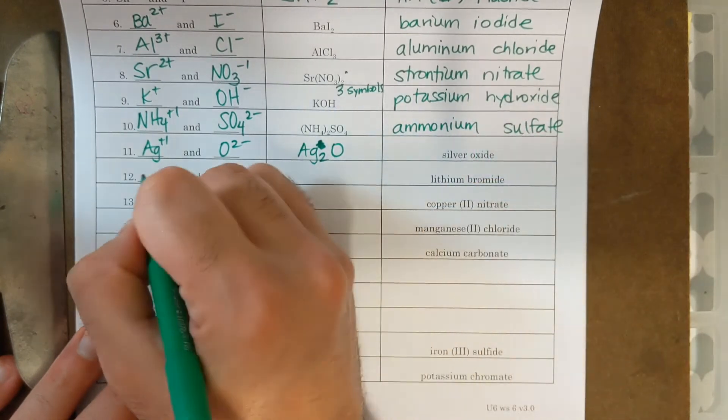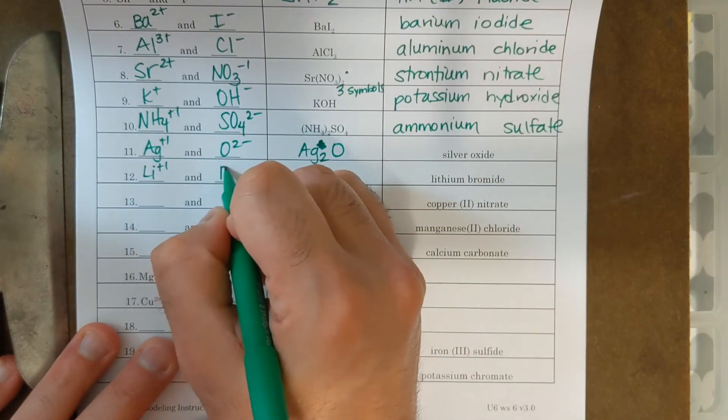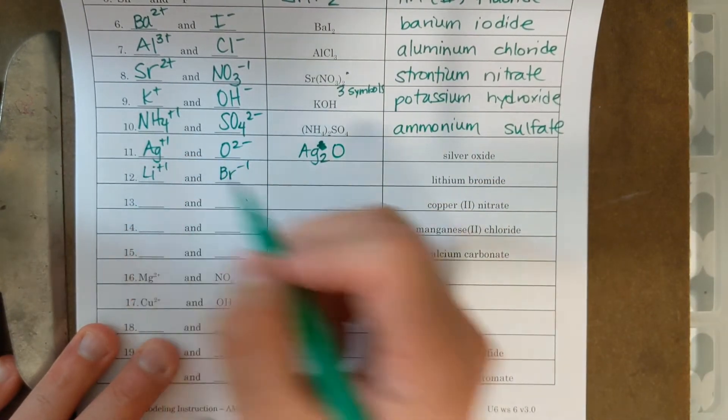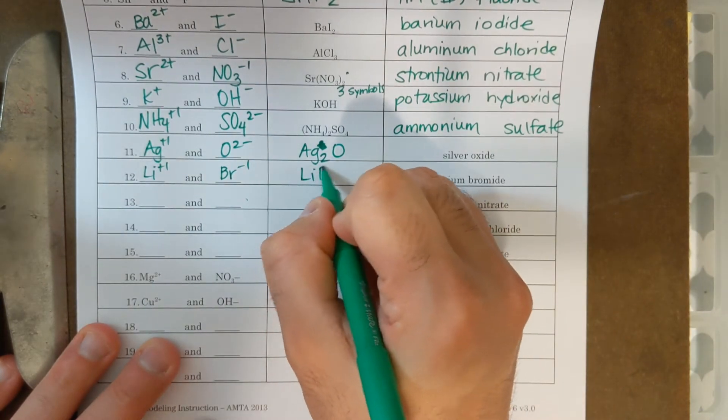Then we got lithium bromide, LI plus, BR minus. If I do the crisscross method, I need one of each, LIBR.